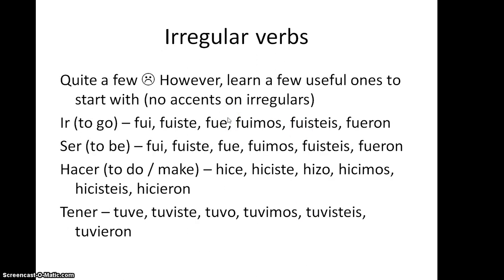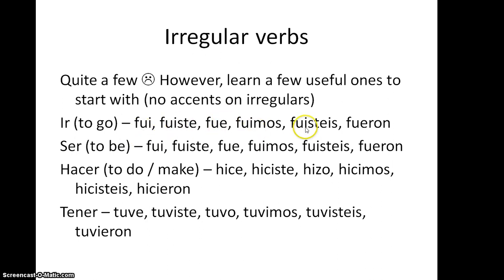Unfortunately, there are quite a few irregular ones. Here are some useful ones. Note that there are no accents at all on any of the irregular ones. IR and SER are exactly the same for each person, which saves you a little bit of time. They go: fui, fuiste, fue — notice the difference: 'I' here, 'E' here — fuimos, fuisteis, fueron. Exactly the same for SER.